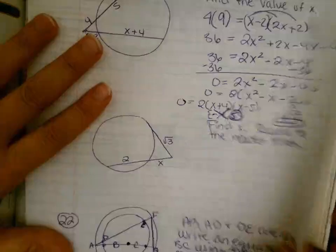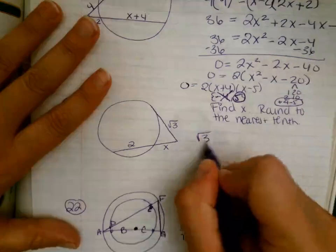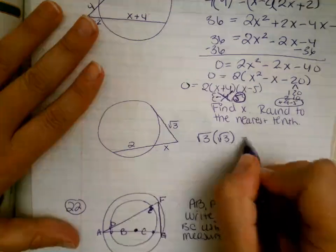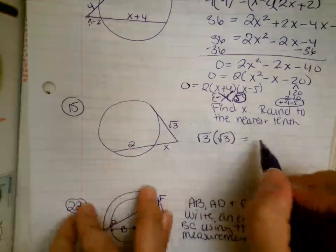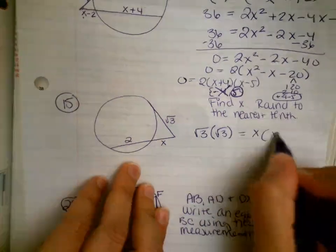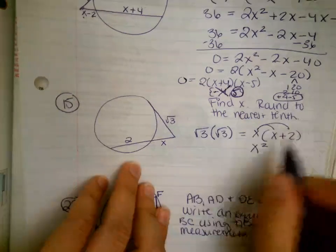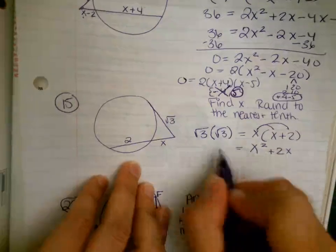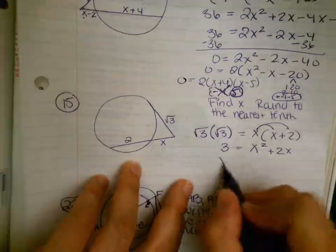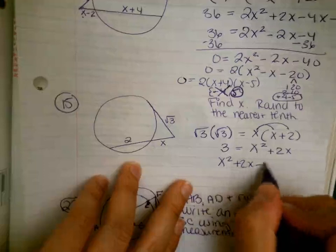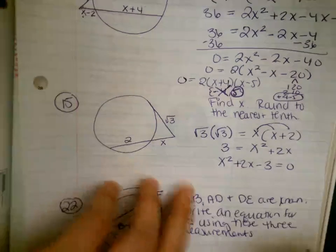Number 15. Outside times whole. The outside and the whole is the same amount equals outside times whole factor. x squared plus 2x equals 3. So we have x squared plus 2x minus 3 equals 0. Because I'm going to subtract 3 from both sides.